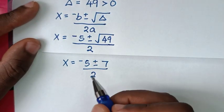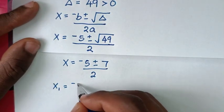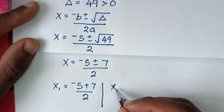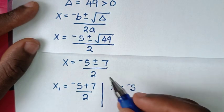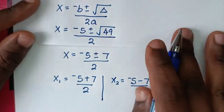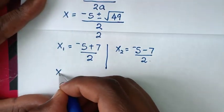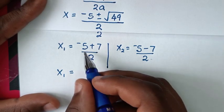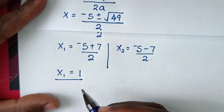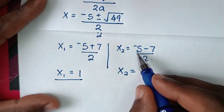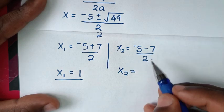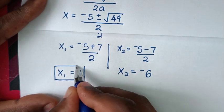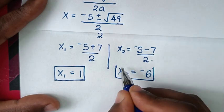The first value of x: negative 5 plus 7 equals 2, divided by 2 equals 1. The second value of x: negative 5 minus 7 equals negative 12, divided by 2 equals negative 6. So x equals 1 is the first value, and x equals negative 6 is the second value.